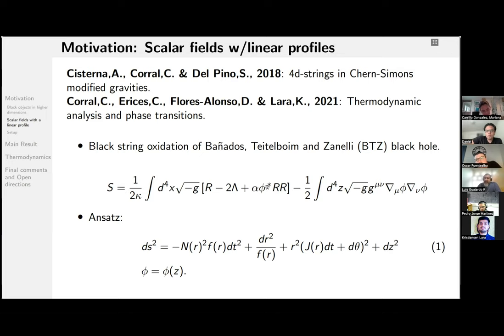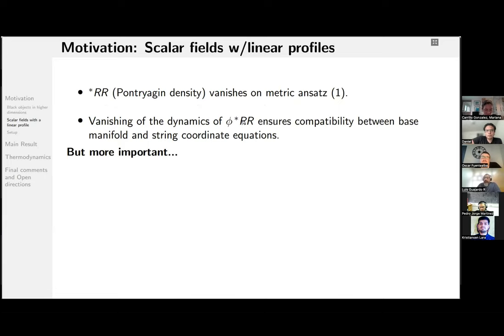So, for the ansatz, the proposed ansatz, you can get that the Pontryagin density vanishes. And moreover, the dynamics of the non-minimal coupling also vanishes, ensuring compatibility between the background and the extended coordinate. However, since the Pontryagin density vanishes on the ansatz, you are recovering the massless Klein-Gordon equation again. So you are recovering the linear profile again.